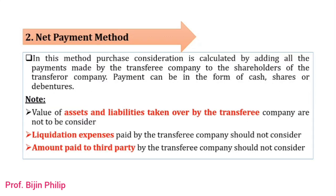The second method is the net payment method. In this method, purchase consideration is calculated by adding all the payments made by the purchasing company to the shareholders of the liquidating company. Payment can be in the form of cash, shares, or debentures. We calculate the purchase consideration by adding all payments made by the purchasing company to the shareholders of the liquidating company to get the value of purchase consideration.